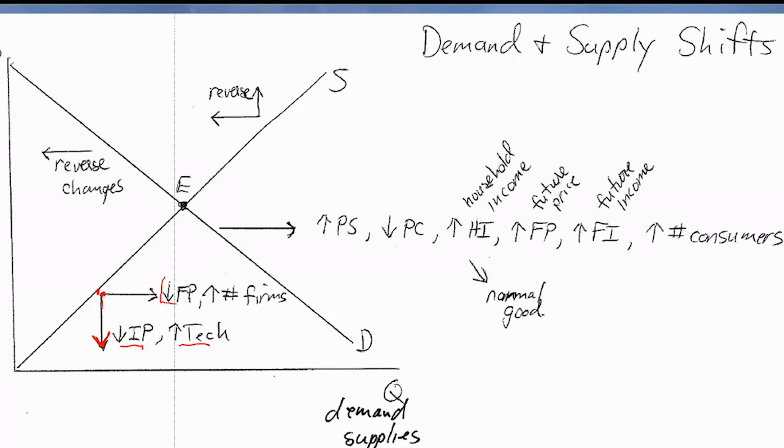But it's going to shift right if there's a decrease in the future price expectations and if there's an increase in the total number of firms supplying the market in this particular product. And so these changes are going to cause rightward shifts in the supply curve.